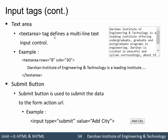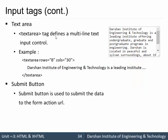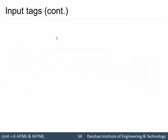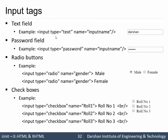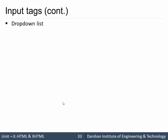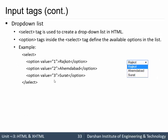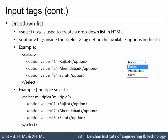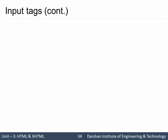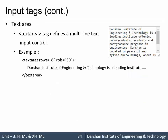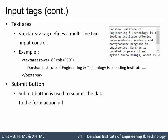So that covers all the input tags. To quickly recap: we have seen text, password, gender radio, checkbox, dropdown list with select, multiple select, textarea, and the submit button.